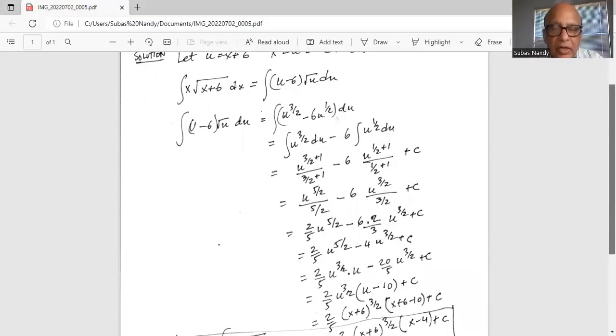Now we will take u 3 by 2 outside the parenthesis and 2 fifth. So we will write 4 as 20 divided by 5 and u 5 over 2 is u 3 by 2 multiplied by u.